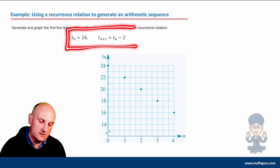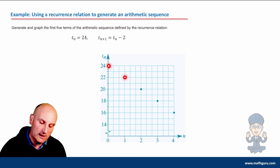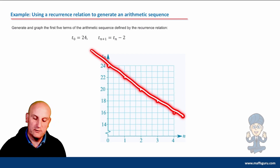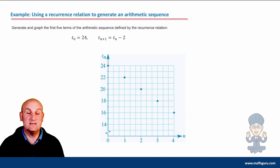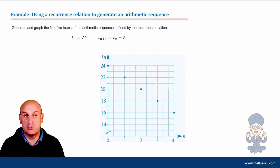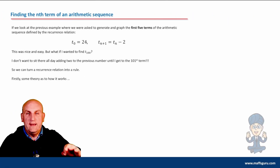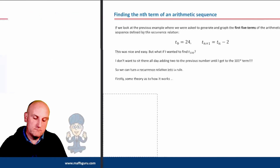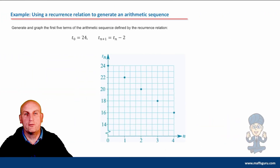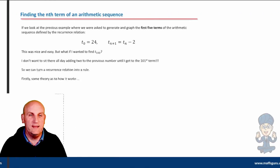So there is my recurrence relation and there is my graph. What you notice is those points are exactly where they're supposed to be, and if I was going to, I could draw a perfect straight line through them. Arithmetic sequences will always, always give you straight lines. They will either slope up or they will slope down. So that should give you enough to graph any one of these things.